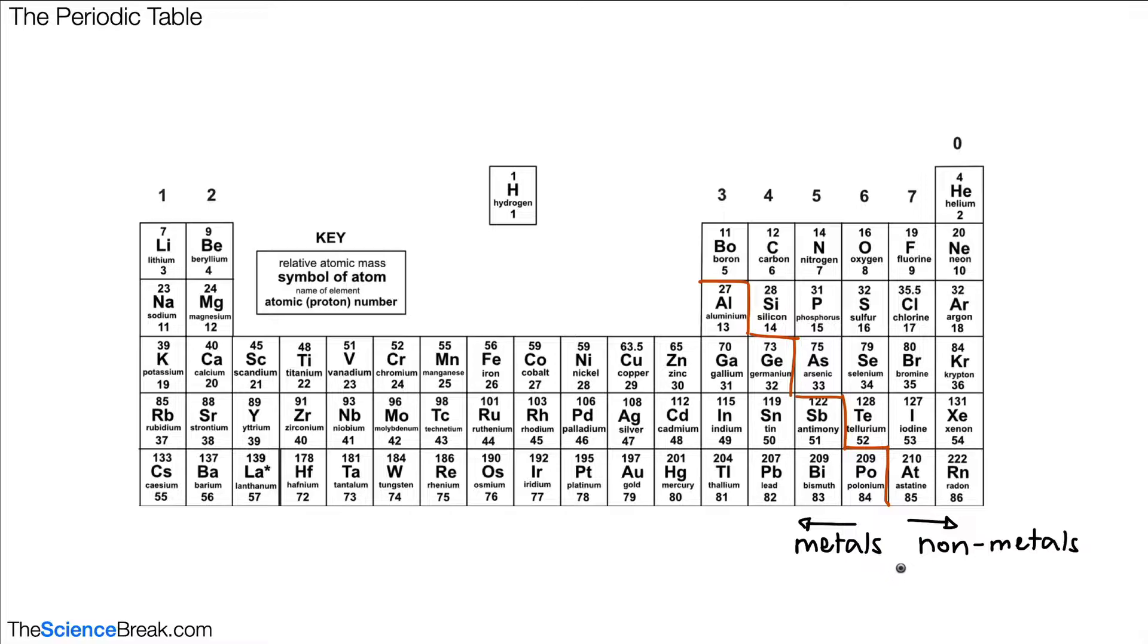We also have these little numbers at the top here, and these are the groups. We have 1, 2, 3, 4, 5, 6, 7, and group 0 at the end. These are the groups.